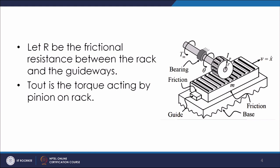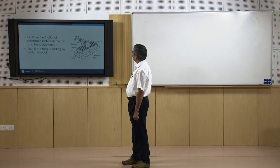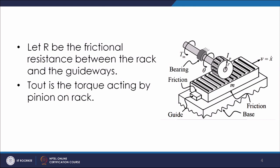The rack has mass m and translates with velocity v, or x-dot, in the direction of motion. We assume friction exists between the rack and the guide ways, so let R be the friction resistance between the rack and the guide ways. We model that friction as well. T_out is the torque acting by the pinion on the rack.